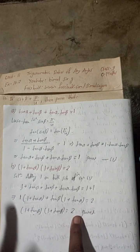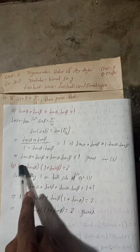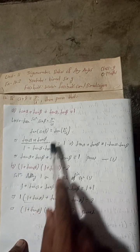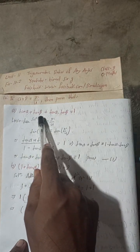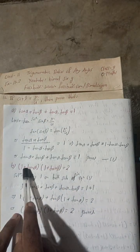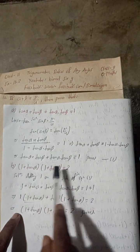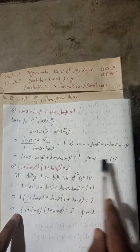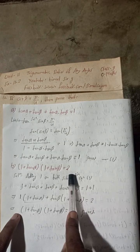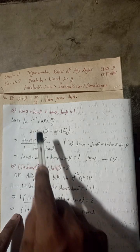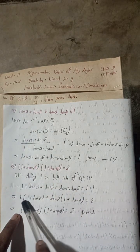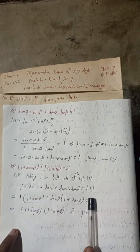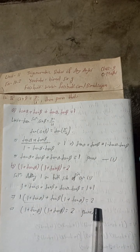Here you have to be careful. Suppose in the examination only this question — 10b — is given. Then you have to start from the beginning and write all steps including the derivation from part A, not just reference equation 1 directly. So in the exam write all the steps sequentially. This is the trick here.